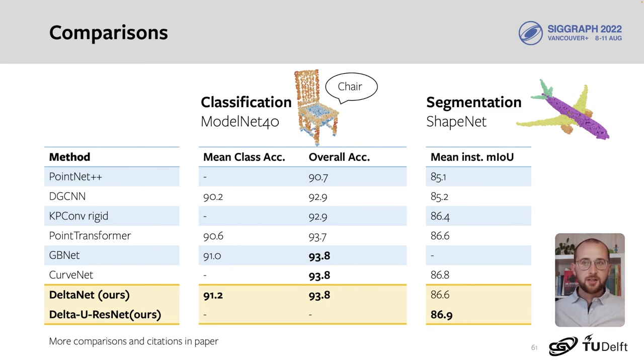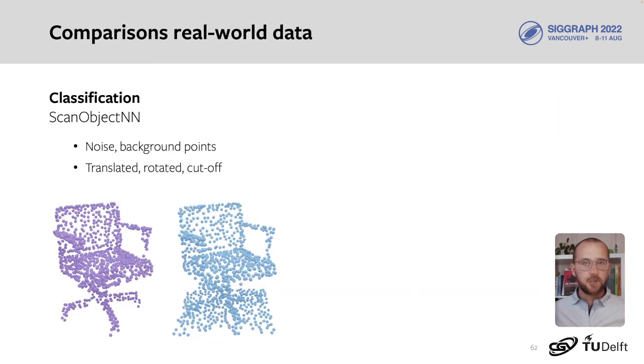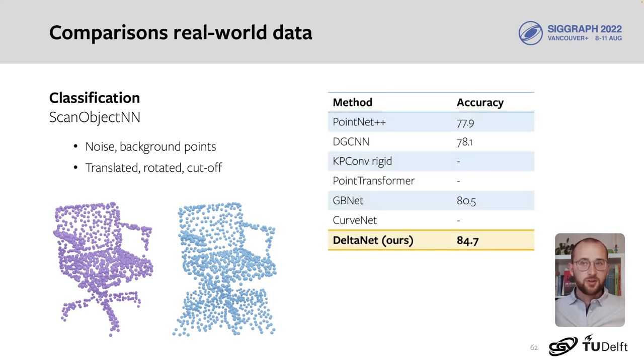We also tested on more challenging data. ScanObjectNN is a classification task with objects from multiple scan room datasets. It includes noise and background points, and there are variants of the data with translated and rotated bounding boxes. Even on the most difficult variant, we see a large improvement over previous works.